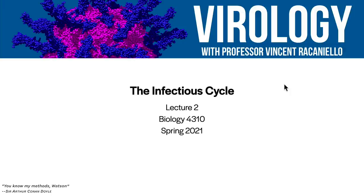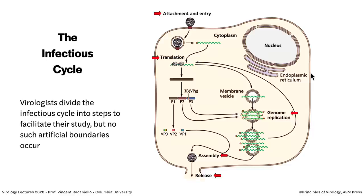Welcome back everyone to lecture two. Today we're going to talk about the infectious cycle — what happens when a virus attaches and gets into a cell, how we study it, and all the events that are happening. We'll talk a little bit about methods today, because this is particularly important for SARS-CoV-2, as we have learned in the past year. The infectious cycle means everything that happens in a virus-infected cell, from attachment and entry to the production of new virus particles.